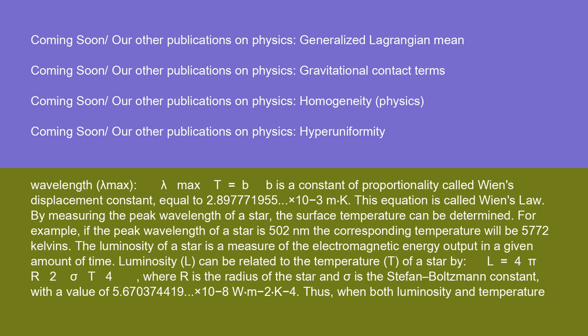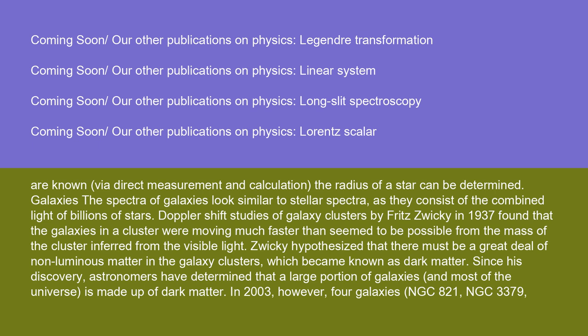The luminosity of a star is a measure of the electromagnetic energy output in a given amount of time. Luminosity L can be related to the temperature T of a star by L = 4πr²σT⁴, where r is the radius of the star and σ is the Stefan-Boltzmann constant, with a value of 5.670374419 × 10⁻⁸ W·m⁻²·K⁻⁴. Thus, when both luminosity and temperature are known via direct measurement and calculation, the radius of a star can be determined.